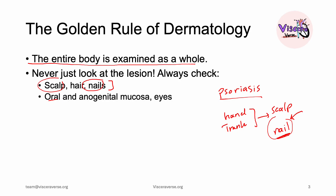Oral and anogenital mucosa should also be checked. For instance, if a patient presents with a blister on their skin, I want to definitely check their oral mucosa — it could be something called pemphigus vulgaris. We're going to dedicate a separate video to this autoimmune disease.